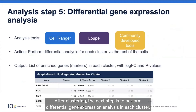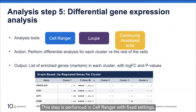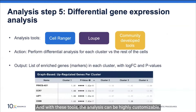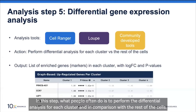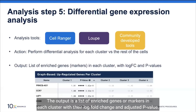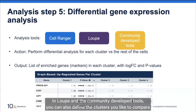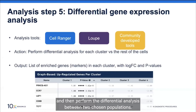After clustering, the next step is differential gene expression analysis for each cluster. This can be performed in Cell Ranger with fixed settings, or using Loop and community developer tools for a highly customizable analysis. What people often do is perform differential analysis for each cluster compared to the rest of the cells. The output is a list of enriched genes or markers in each cluster with their log fold change and adjusted p-value. You can also define specific clusters to compare between two chosen populations.